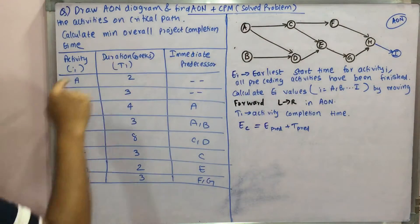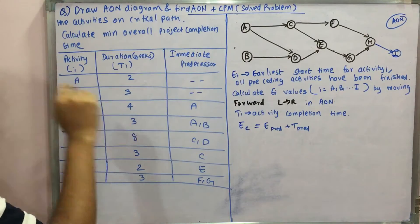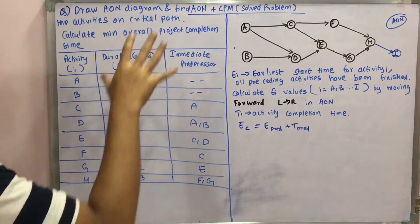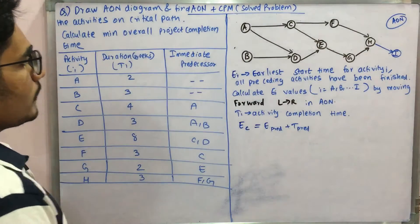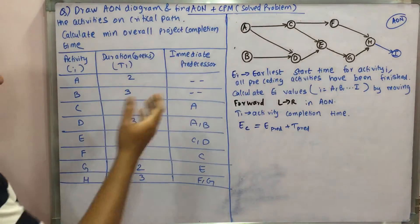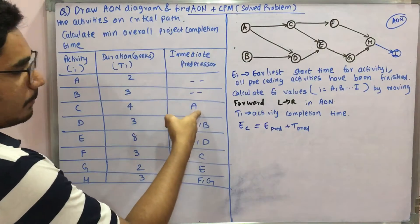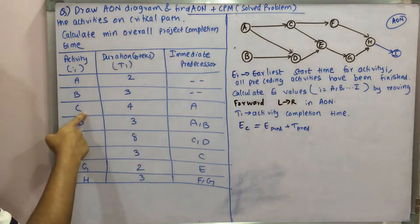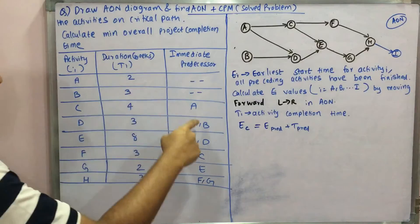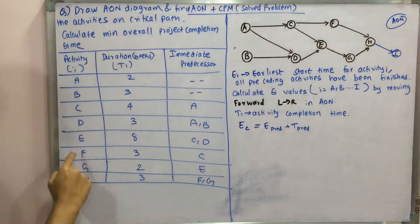For activity A you have two weeks for completion, for activity B three weeks, activity C four weeks, and so on. The third column is the immediate predecessor — that is the prior activity which triggered the current activity. Only after a predecessor's completion can you do the current activity. For example, only after completion of activities A and B can you do activity D, and so on.